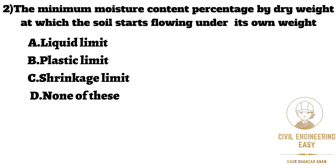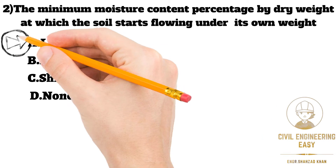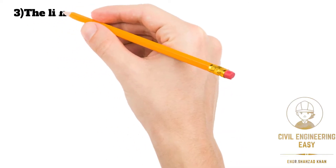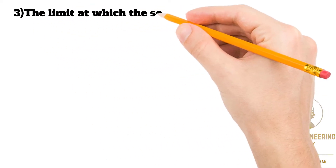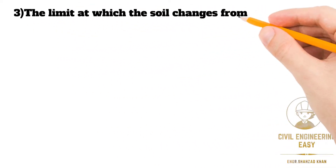The moisture content in percent at the point of transition from plastic to liquid state — that is, the minimum moisture content percentage by dry weight at which the soil starts flowing under its own weight — is called liquid limit. The correct option is liquid limit.